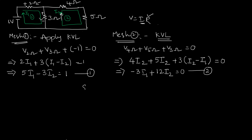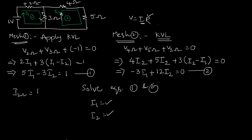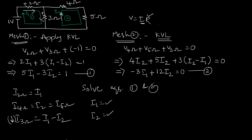After getting equations 1 and 2, solve them to get the values for I1 and I2. The current through the 2 ohm resistor is simply I1. The current through the 4 ohm and 5 ohm resistors is I2. For the 3 ohm resistor — if asked for the current flowing from top to bottom — I1 flows top to bottom and I2 flows bottom to top, so the net current is I1 − I2.